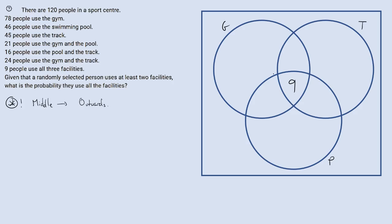Start in the middle: 9 people use the gym, pool, and track this time. Now step outwards to the two-overlap sections. Gym and track: 24 people overall, 9 already accounted for, so 24 take away 9 gives 15. Track and pool: 16 overall, take away 9, leaves 7. Gym and pool: 21 overall, take away 9, gives 12.